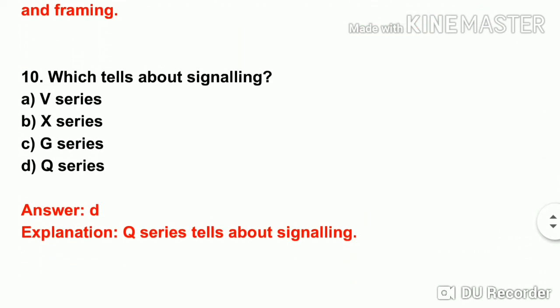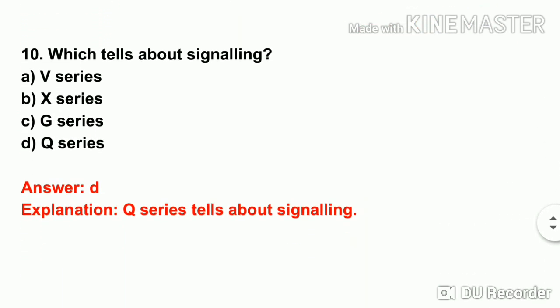The next question: which series tells about signaling? The answer is Q series — Q series is about signaling. V series covers data communication over telephone networks.